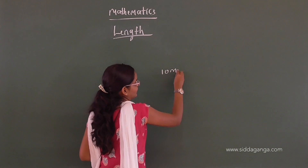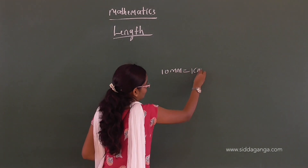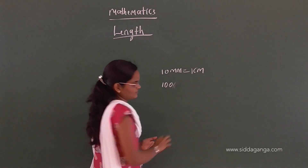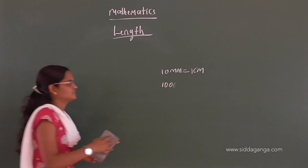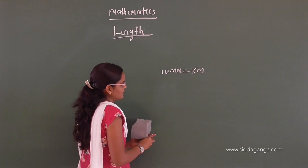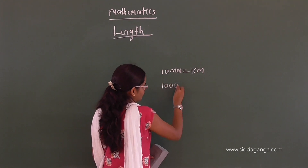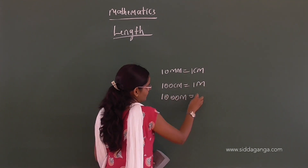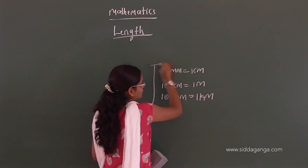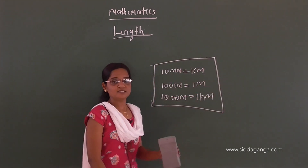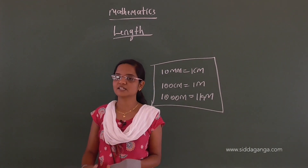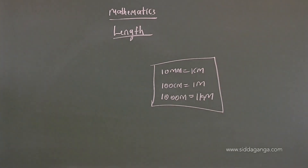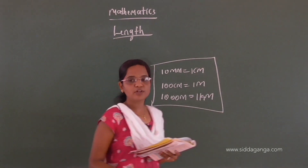10 millimeters is equal to 1 centimeter, 100 centimeters is equal to 1 meter, and 1000 meters is equal to 1 kilometer. These are some important relations. Please remember — based on these relations, let us discuss some exercise problems now. That is Exercise 8.1.